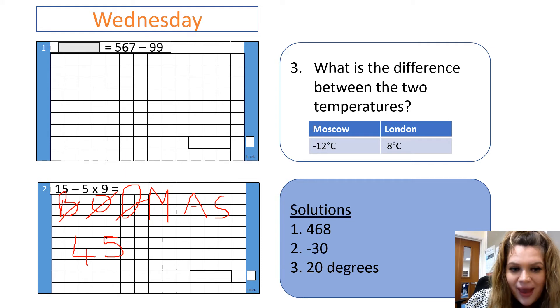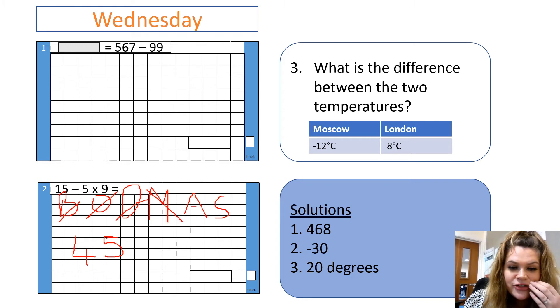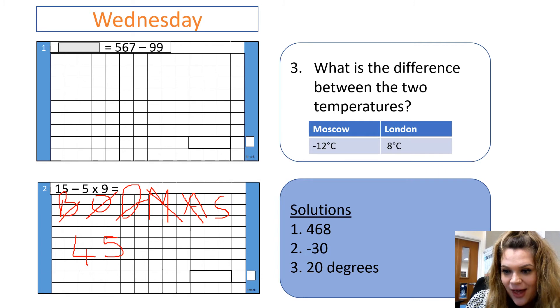Right. So, now I need to do my multiplication. Now, I don't have any division. Now, I need to look at my subtraction. So, I have got 15, take away 45. Let's do it. So, I'm just going to rub this out.